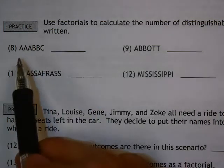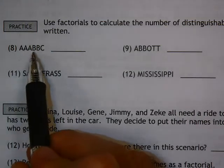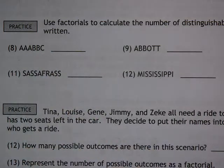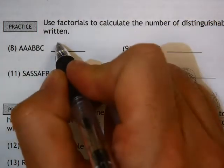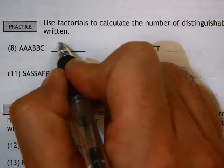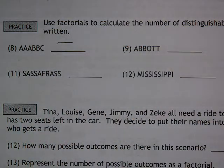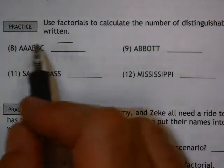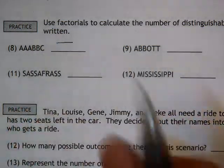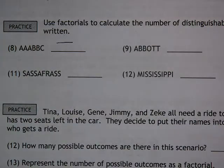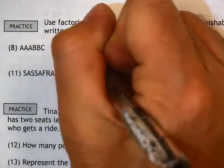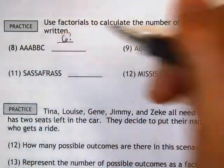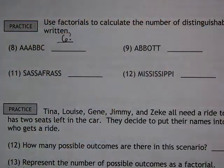For number 8, we're given AAABBC. When we start our factorials, we're doing a fraction, and on the top we should have the total number of letters in the entire word. You have three, four, five, six total letters, so you'll have six factorial on the top.